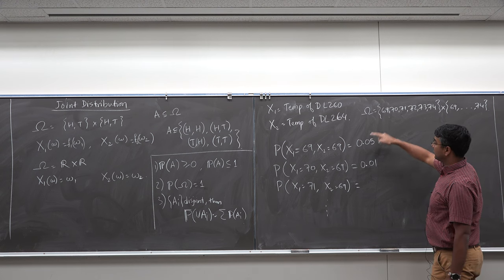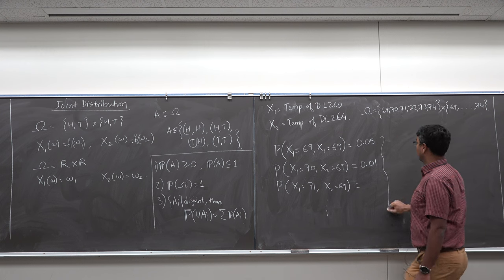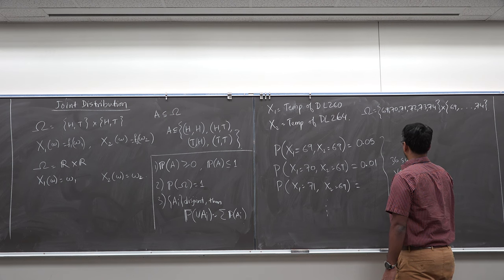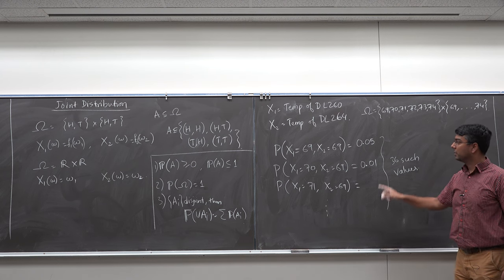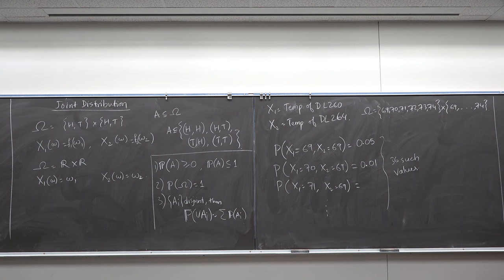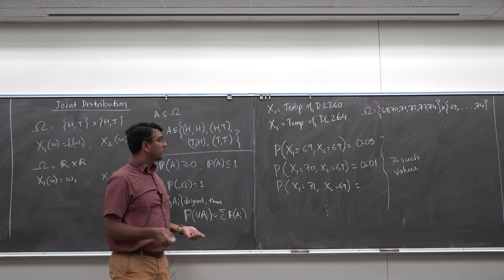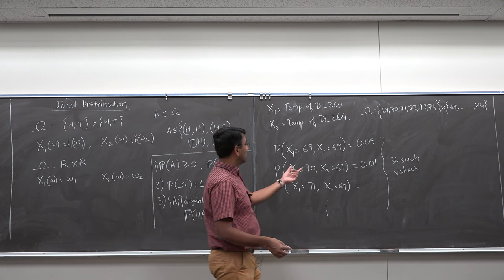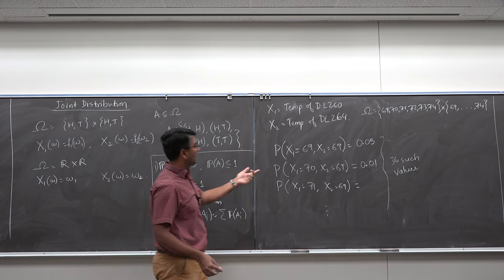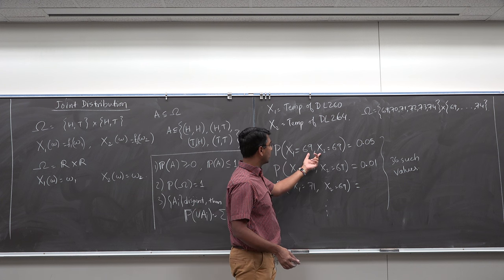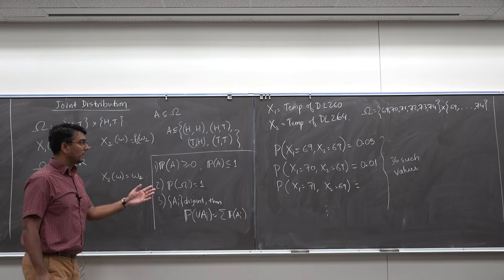Since each variable ranges over 6 values (69 to 74), jointly there are 36 possible pairs, so we will have 36 such joint probability values — all of which must add up to 1. That is the requirement: P(Ω) = 1. You look at the two random variables, create all the individual sets from omega, and specify what percentage of the dataset has each combination of values. That's how you get the joint measure.